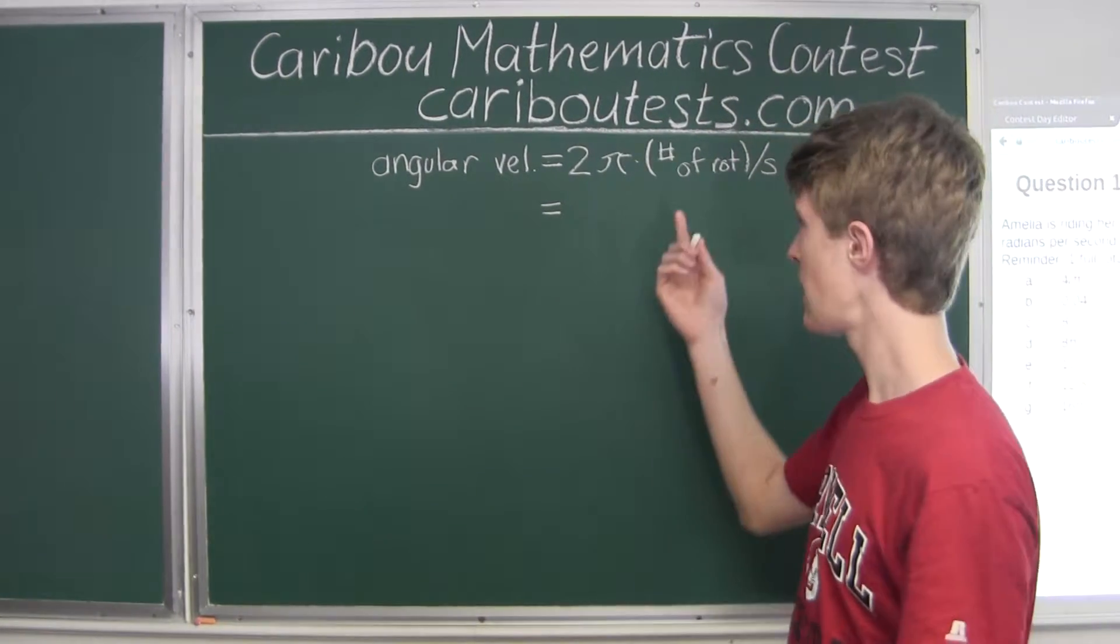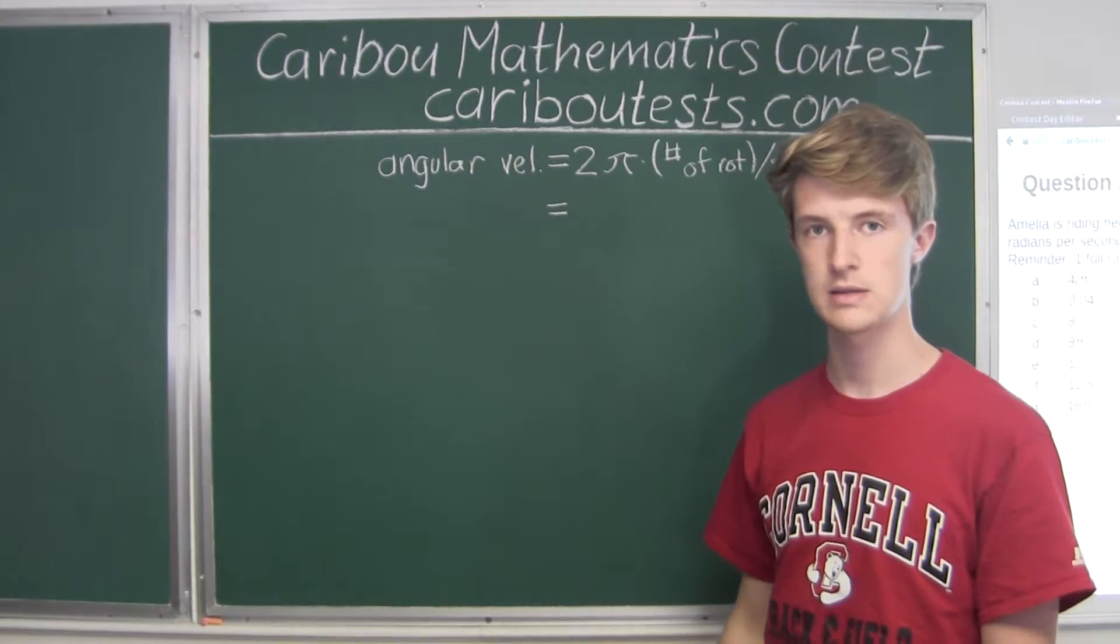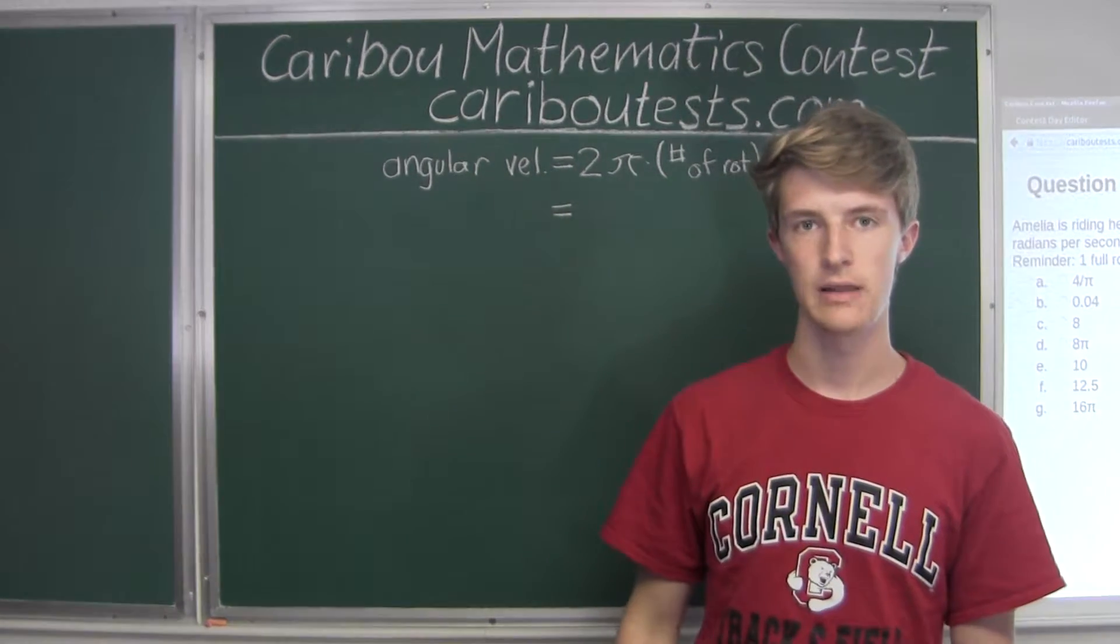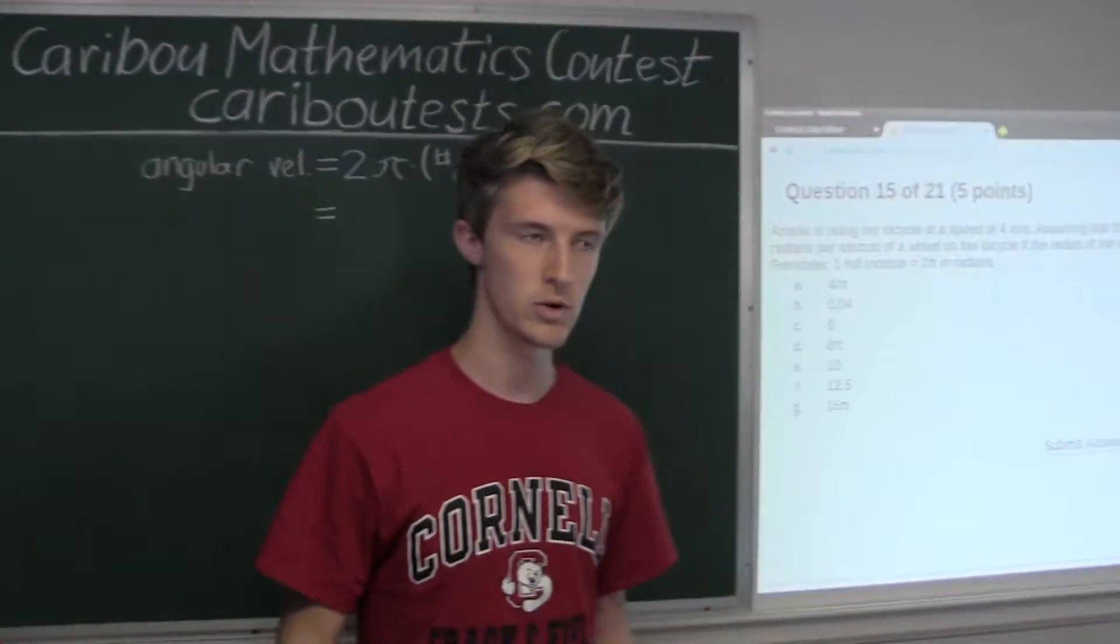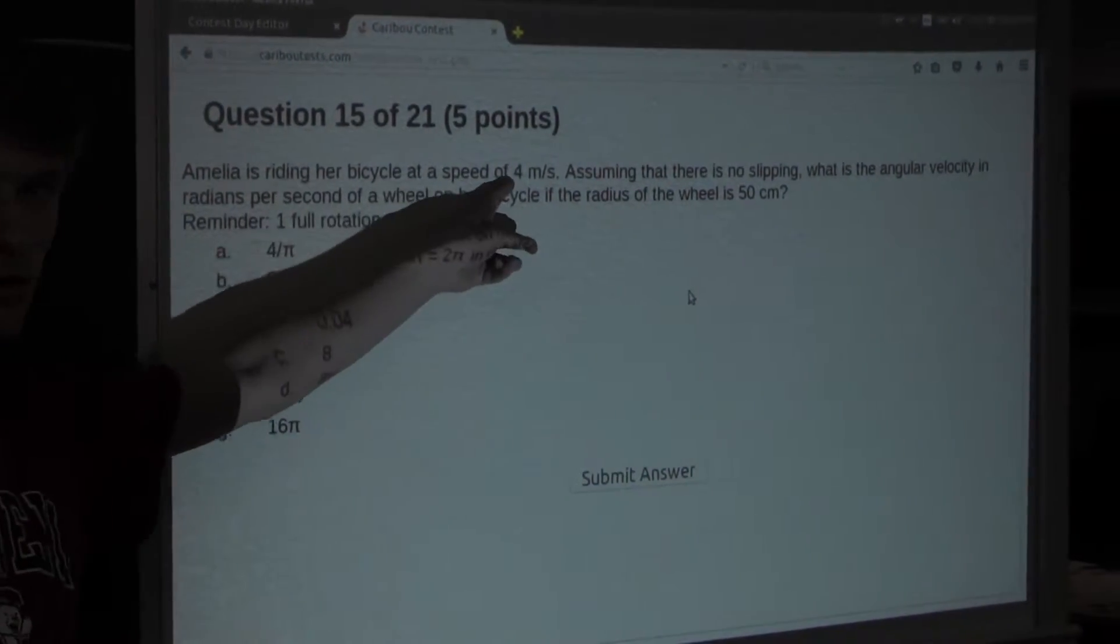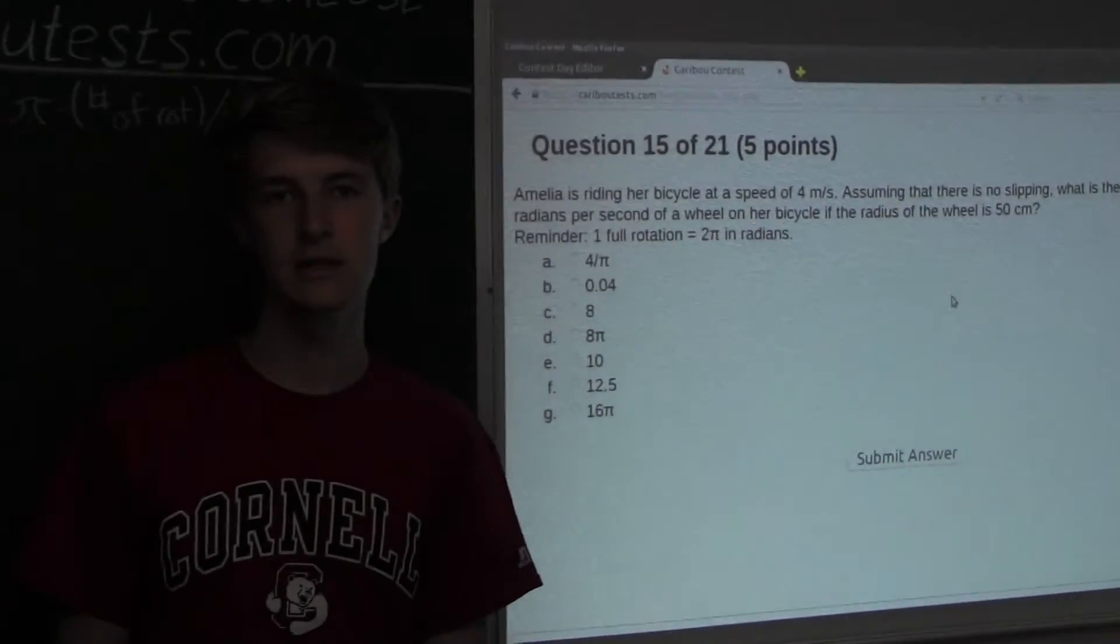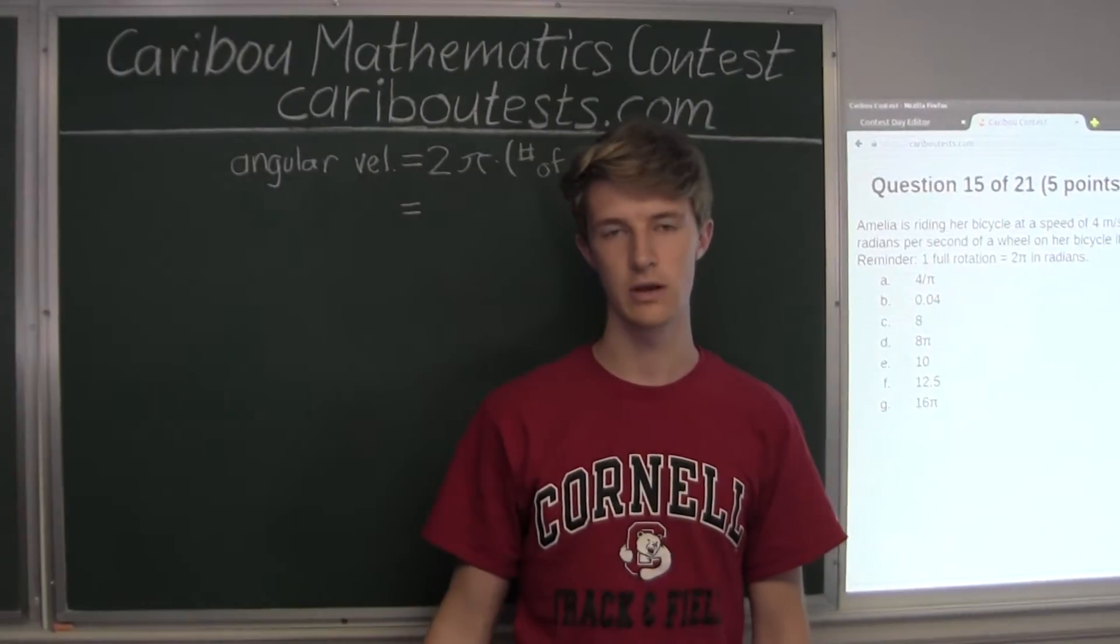Alright, now let's think, how can we find the number of rotations that the bike wheel makes? Well, we would need to find the speed of the bike wheel, which we know from the question, she is riding her bicycle at a speed of 4 meters per second. And then, now that we have that, we would then divide that by the circumference of the wheel.